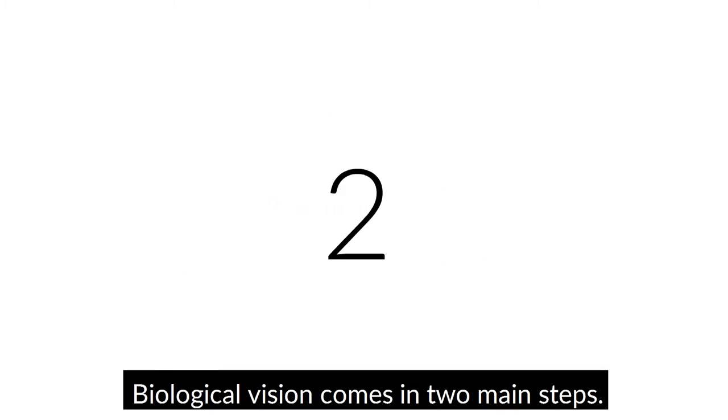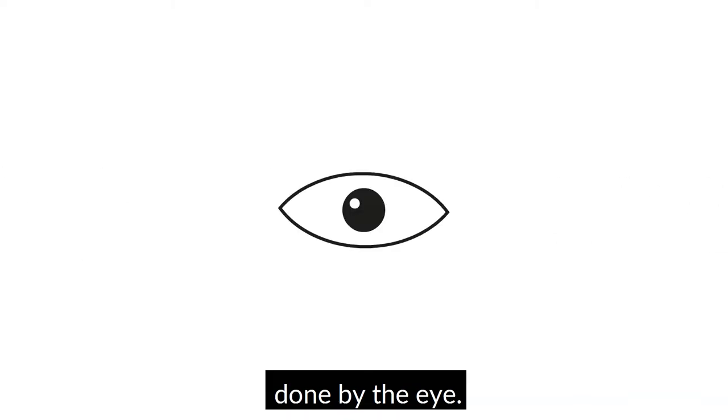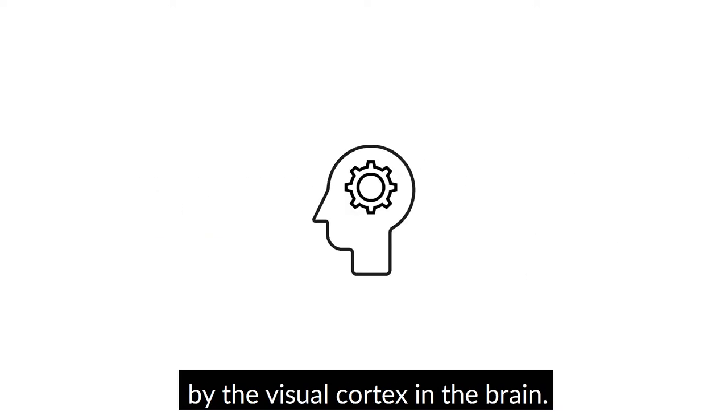Biological vision comes in two main steps. The first is the acquisition of information done by the eye. The second is the processing of this information by the visual cortex in the brain.